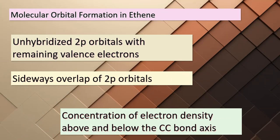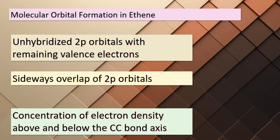Now let's dive into the world of molecular orbital formation in ethene. Each carbon atom in ethene has two remaining valence electrons residing in unhybridized 2p orbitals. These two orbitals can overlap sideways with each other, as shown in figure 9.22. As a result of this overlapping, electron density becomes concentrated both above and below the axis of the C–C bond. This concentrated electron density forms what we call a pi bond, depicted in figure 9.20. In the ethene molecule, the C=C double bond actually consists of two types of bonds: a sigma bond and a pi bond.